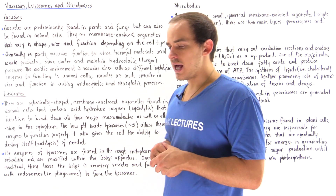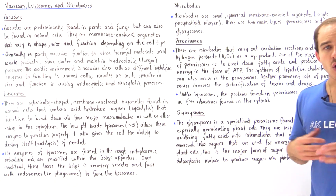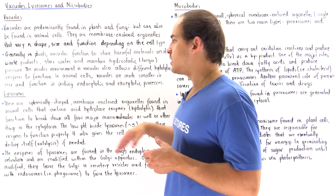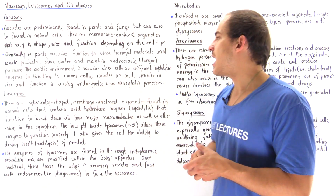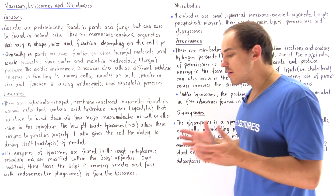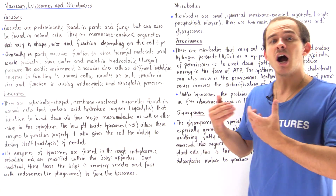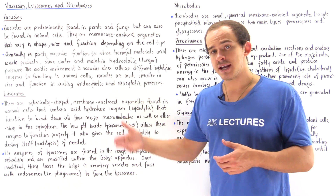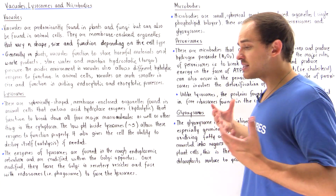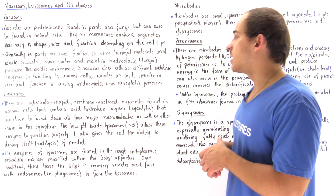In animal cells, vacuoles are much smaller. They do not store as much water and they basically function in aiding endocytotic and exocytotic processes. Endocytosis is the process by which the cell engulfs extracellular material, and exocytosis is the process by which the animal cell expels wasteful types of products.